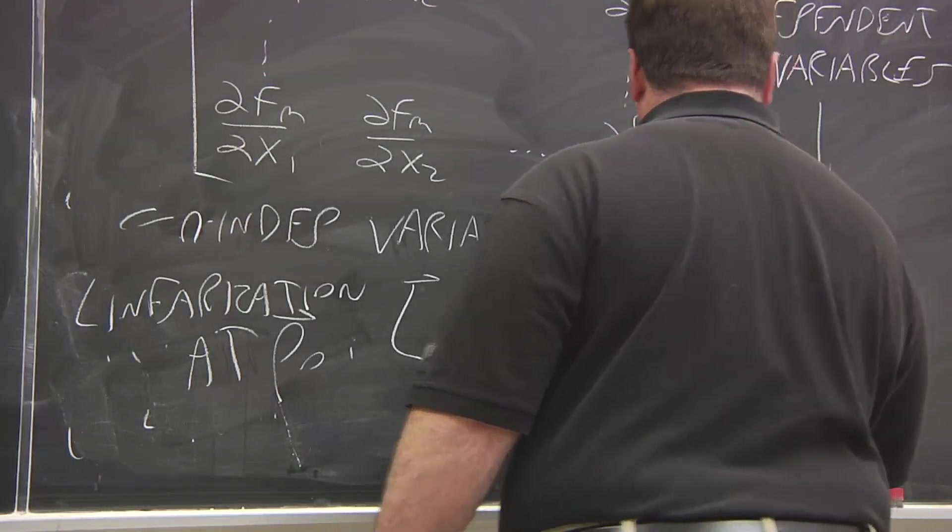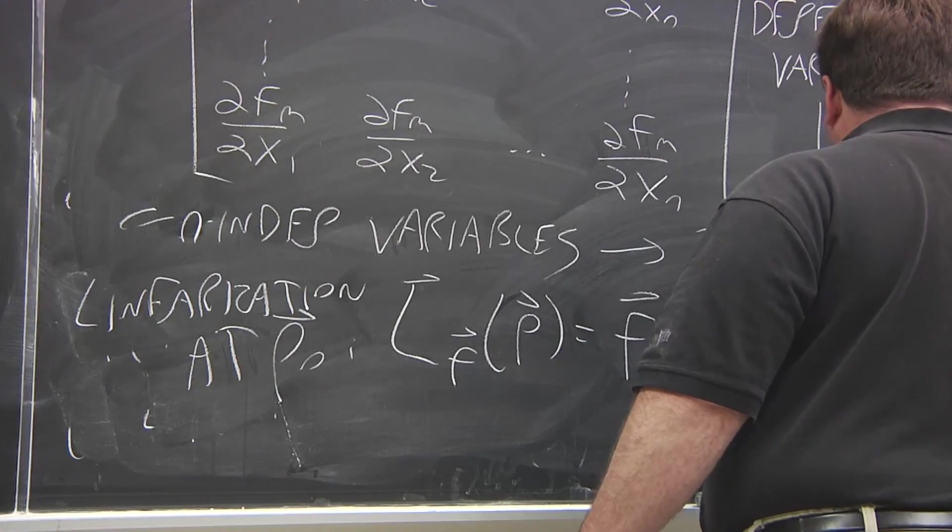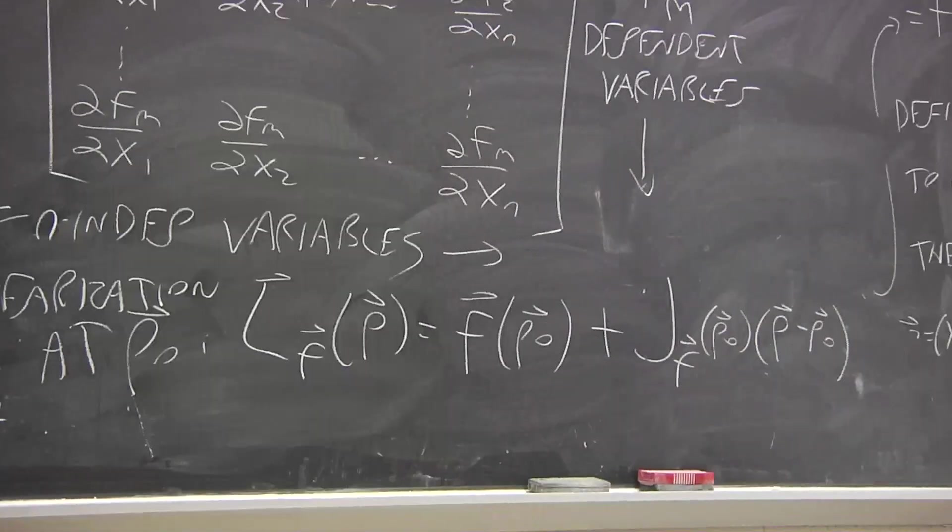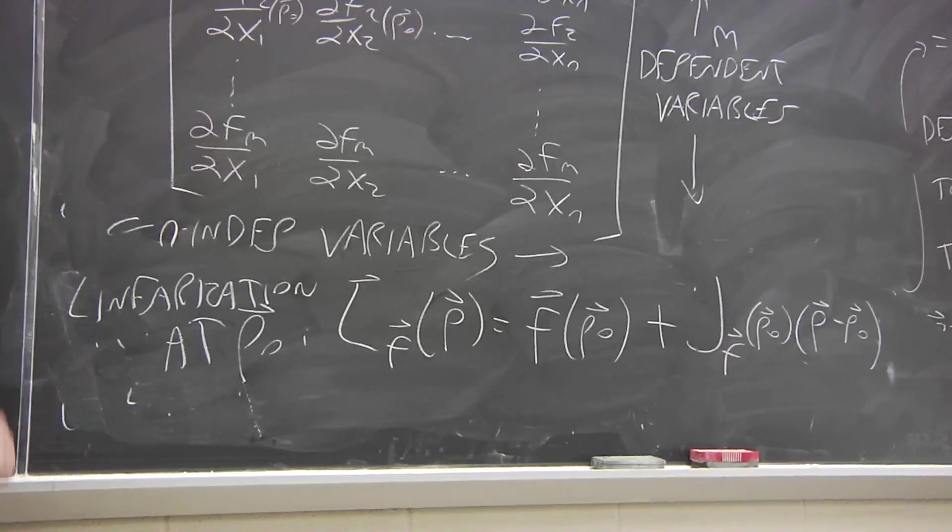So it's just the function value, which is now a vector, F(p₀), plus the Jacobian matrix, J(p₀), times the difference in vectors, to the point you're evaluating and the point you're linearizing around.